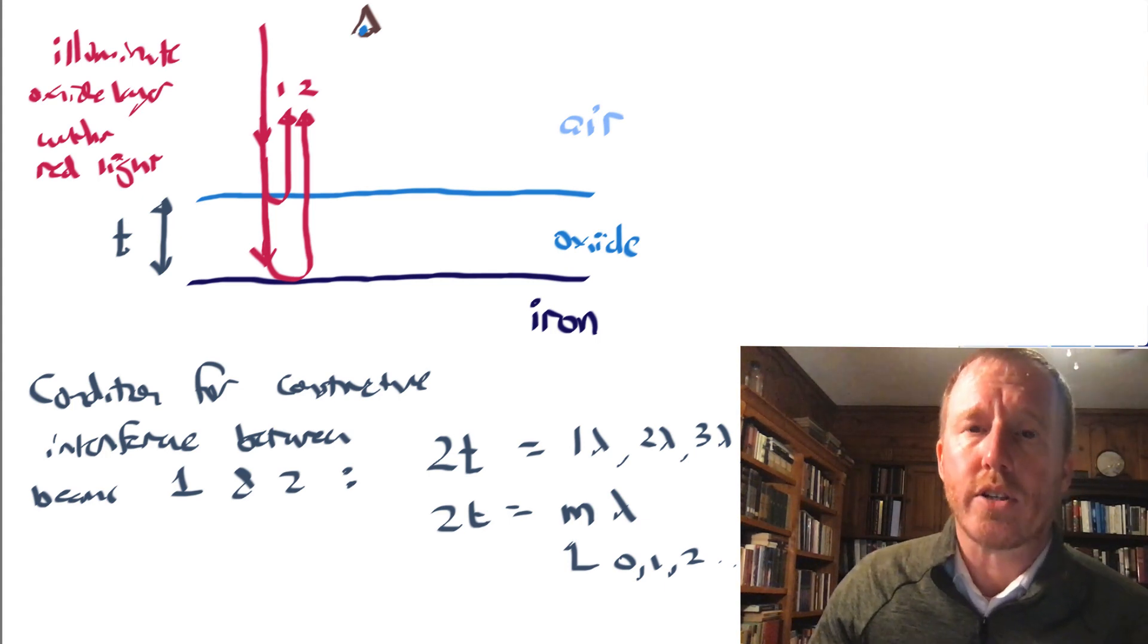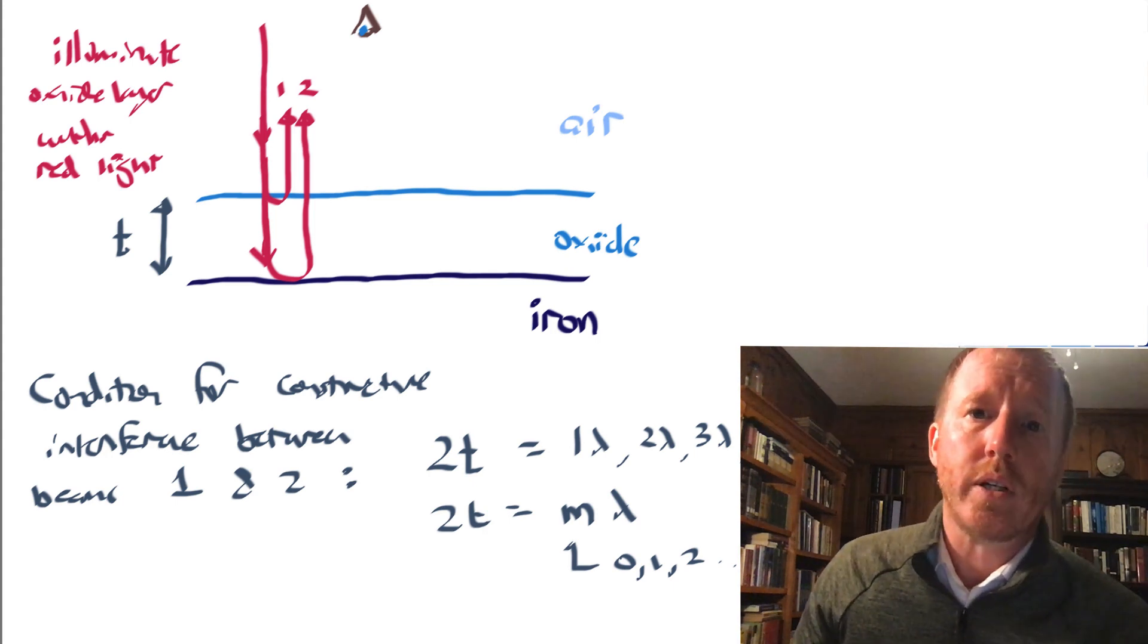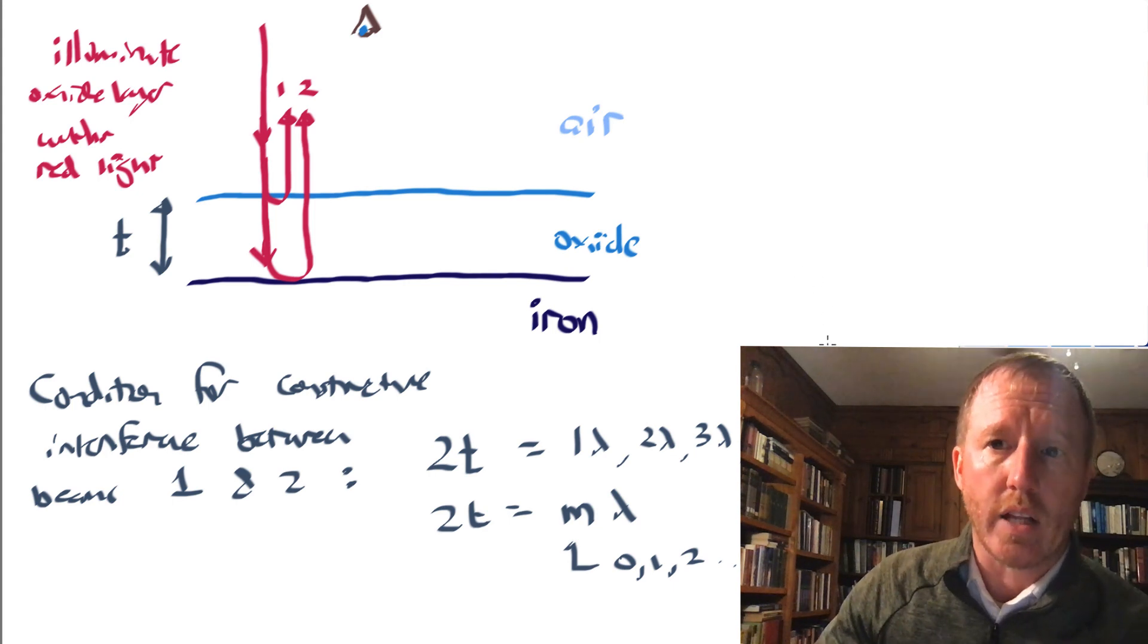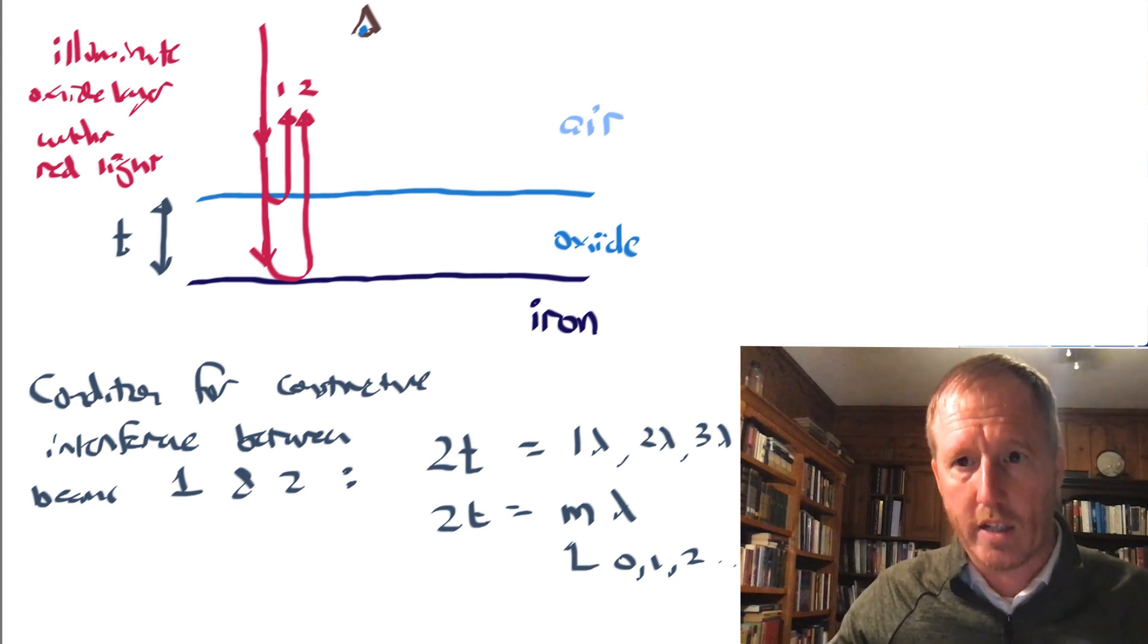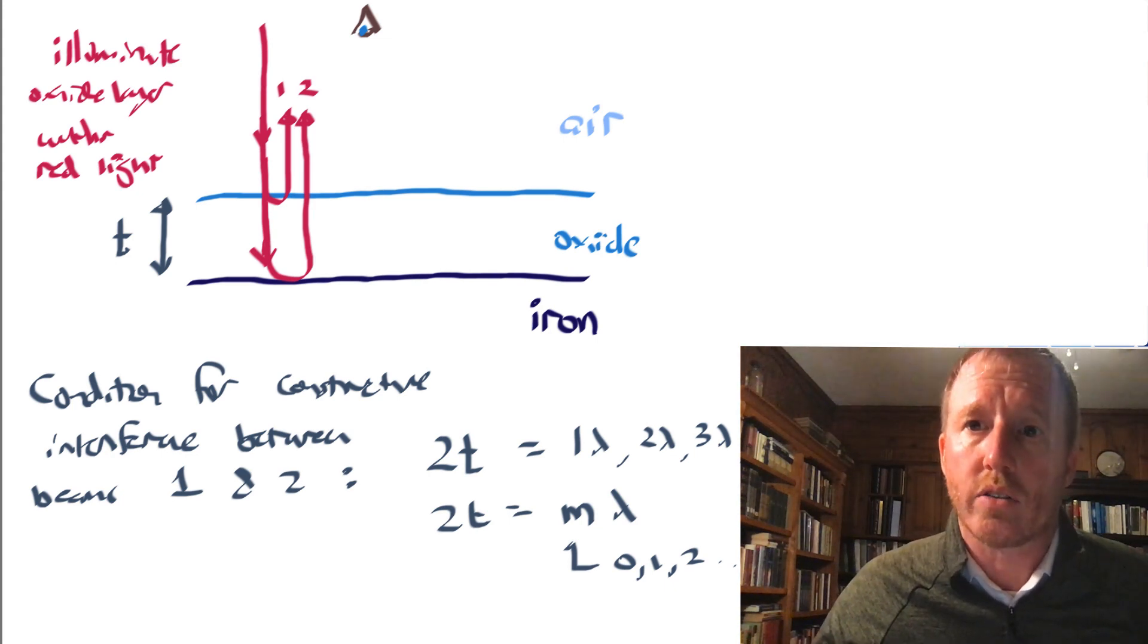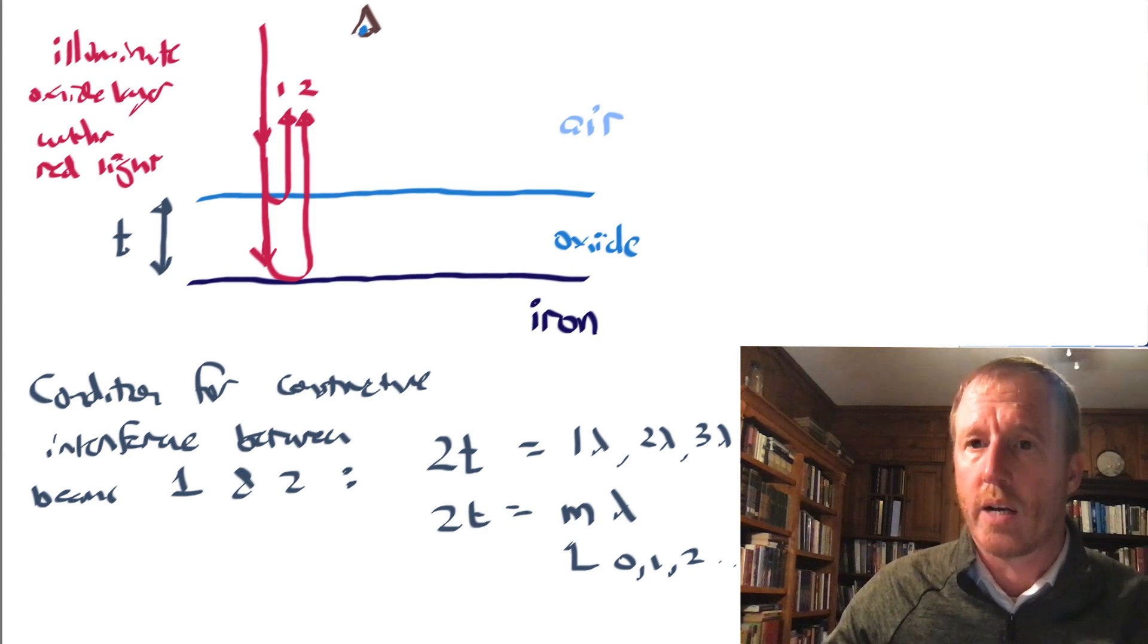So you might imagine, let's just take, for example, if this is red light, the wavelength is about 700 nanometers in air. What we would need to do is we would need to compute for this oxide, the wavelength of the light that's in the oxide. So remember, oxide will probably have a different refractive index than air. And let's suppose, I don't know exactly what the refractive index of oxide is, let's suppose it is such that the wavelength in the oxide is 600 nanometers, slightly shorter than in air, so 600 nanometers in oxide.